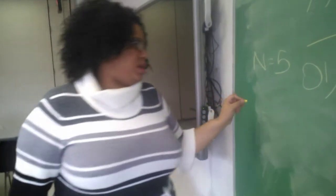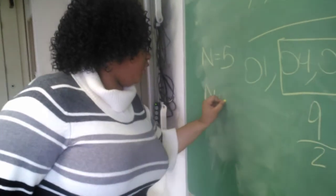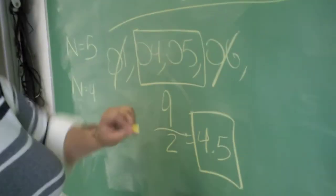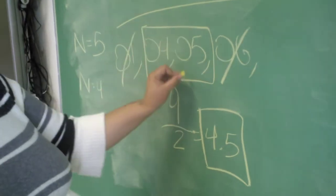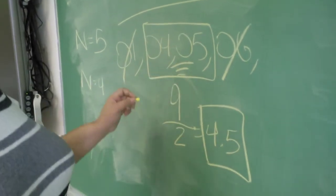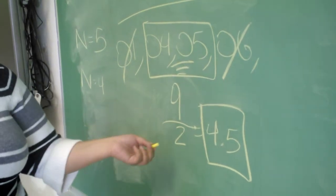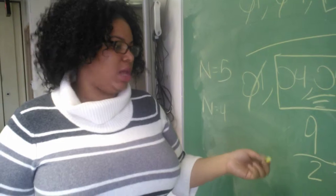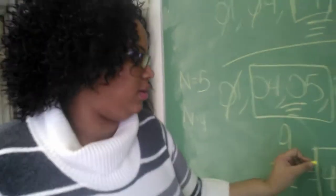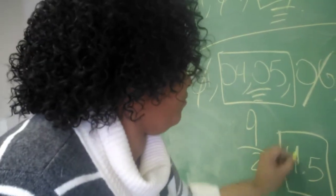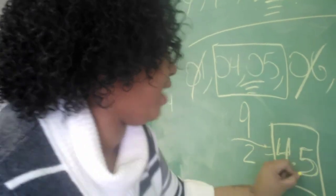And if the data set is even — for this one the data set was 4 — so we cross this one out, we cross this one out, and these two are left in the middle. So we added them up, which gave us 9, and then we divide by 2 because we want to find the median for those two numbers. The median — so we get 4.5.